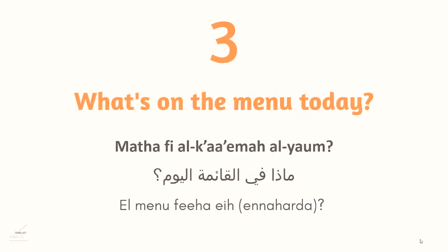Phrase three: ماذا في القائمة اليوم — 'what's on the menu today?' القائمة or قائمة الطعام means the menu, the list of food. In Egyptian Arabic we say المنيو فيها ايه, and instead of اليوم we say النهاردة, so: المنيو فيها ايه النهاردة.